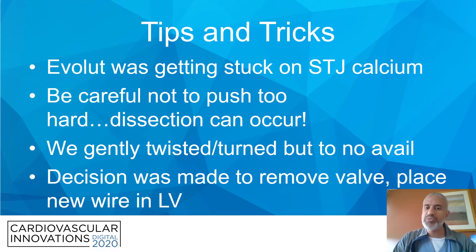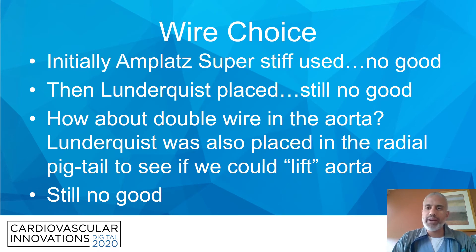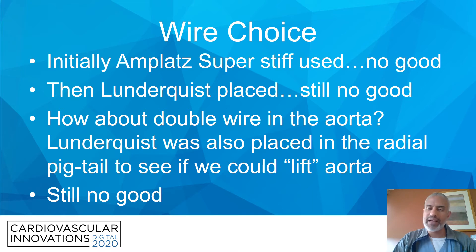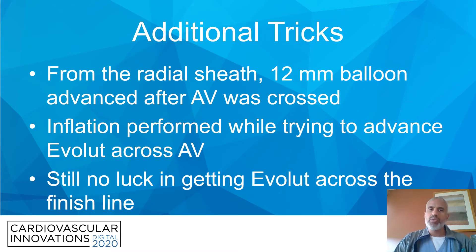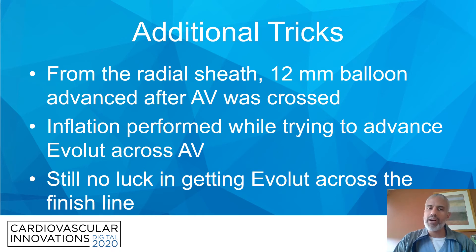We decided to remove the valve and place a new wire in the LV. Since we had a sheath in place, removing the valve was not an issue — one of the advantages of using a self-expanding platform. We tried an Amplatz super-stiff wire — no good. We switched to a Lunderquist — still no good. We then tried a double-wire technique: a wire from the radial sheath through the pigtail into the LV and a wire from the groin access — still could not get the valve to cross. We also tried a balloon inflation into the aortic valve from the radial sheath to deflect and guide the CoreValve into position, but there was still no luck in getting the Evolute across the finish line.